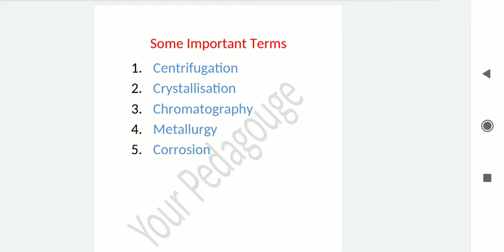Now let's talk about chromatography. It is the modern technique used for separation and purification of organic compounds. The method was discovered by a Russian botanist in 1906, whose name is T.S. Watt. Botanists, as we know, are scientists who study about plants.